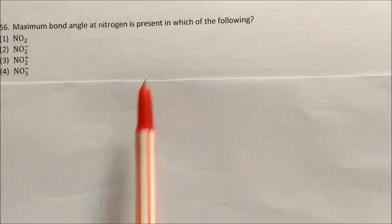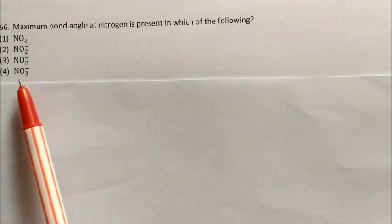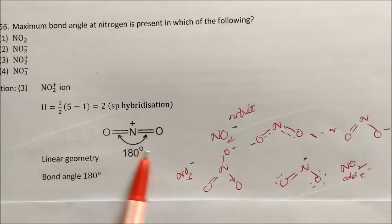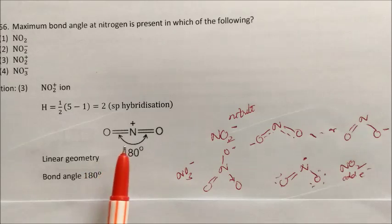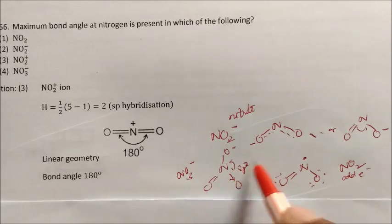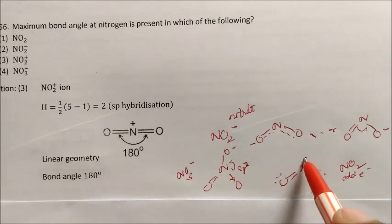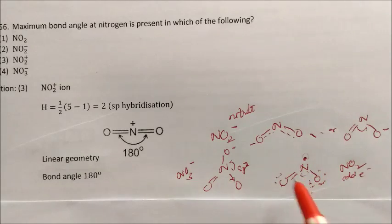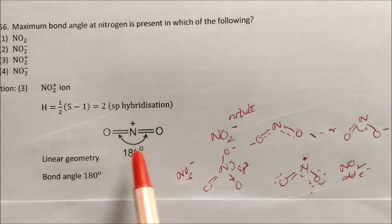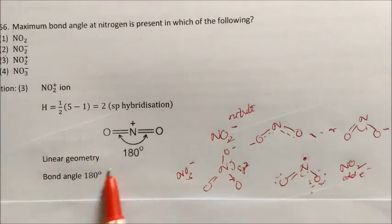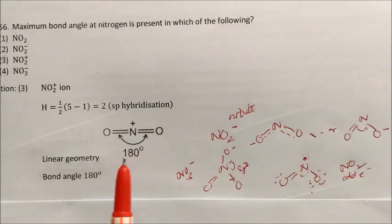Question: Maximum bond angle at nitrogen is present in which molecule — NO2, NO2+, NO2−, or NO3−? For NO2+, the structure gives 180° and hybridization is SP. For NO2−, there is a lone pair. For NO2, there is one odd electron which causes electron repulsion reducing the angle below 180°. Only NO2+ with SP hybridization has exactly 180°. The remaining options have bond angles less than 180°. Answer: NO2+.